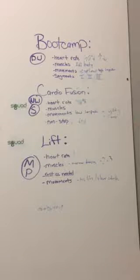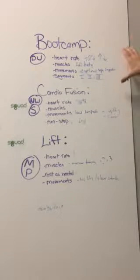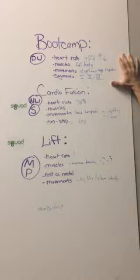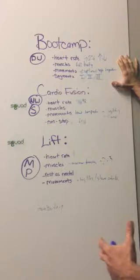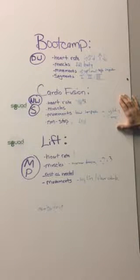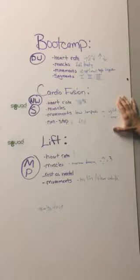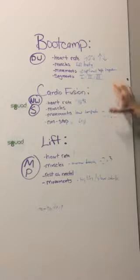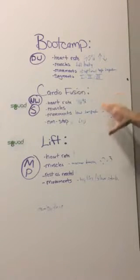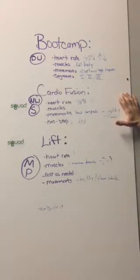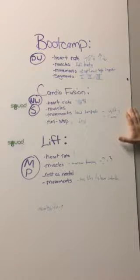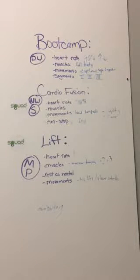These programs are all-encompassing in terms of how we can orient people's memberships within Squad Fitness. Boot camp has a little bit of everything, so for members on limited memberships we want to orient them there — they'll get the most bang for their buck. Cardio Fusion is great because it's low impact and easy on the joints — perfect for beginners or people who don't want to kill it every day and just want to burn calories between boot camp sessions. The lift class is for people who really want to target specific muscle groups.